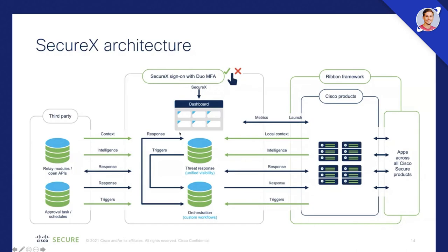Threat Response allows you to investigate threats and respond to threats as well — you can also trigger orchestration workflows from it. On the right side we see Cisco products with important arrows going back and forth. On one hand we see local threat intelligence, such as firewall logs queried from SecureX. It can also be global threat intelligence queried from Talos or AMP — Advanced Malware Protection. We can also send response actions and triggers back and forth, doing both read and write operations. On the left side we can do the same with third-party products as well.